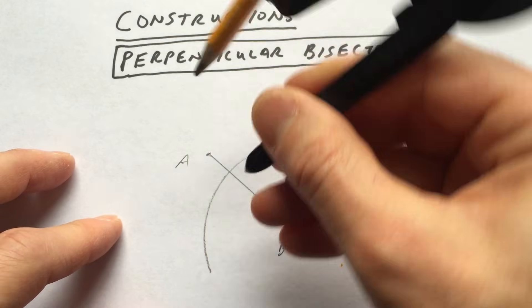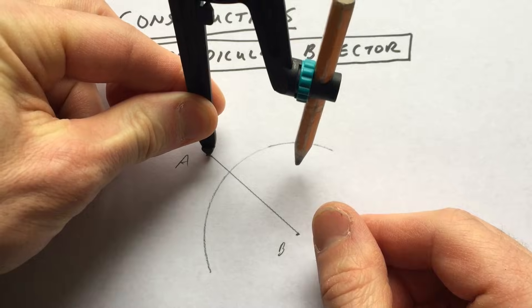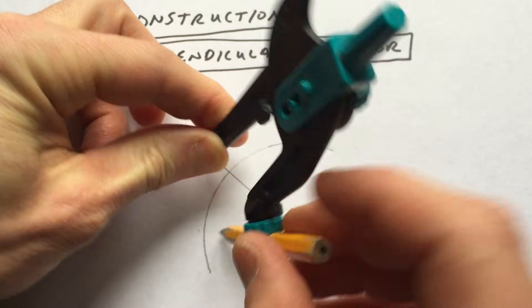And then what you're going to do is go from the other end point, like so, and you're going to make two more arcs.